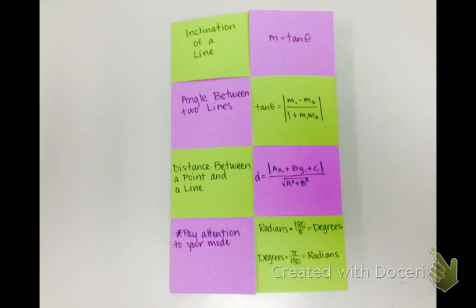In our textbook we had information about lines in our first section. So we talked about the inclination of a line, the angle between two lines, and the distance between a point and a line. So I wanted us to make sure to write down these formulas and that the students need to remember to pay attention to their mode in their calculator because we use both radians and degrees in this section.